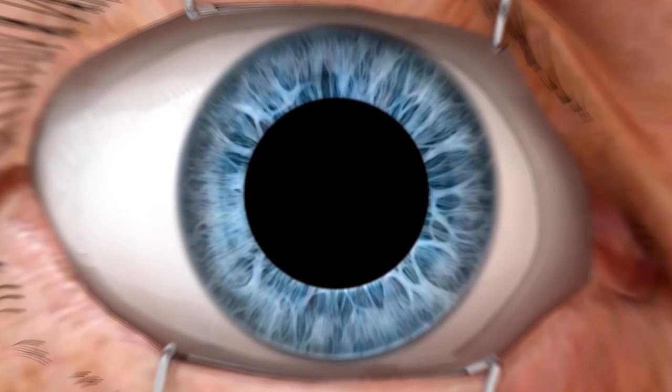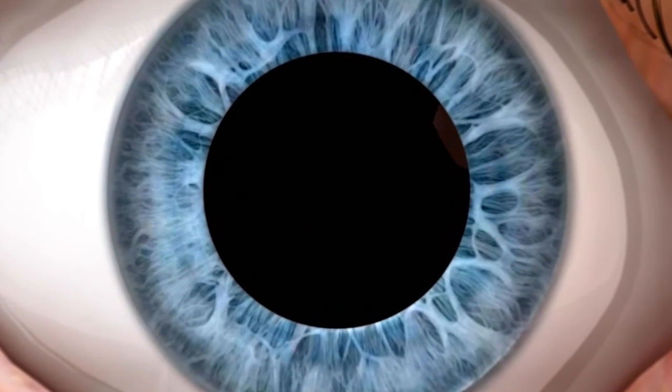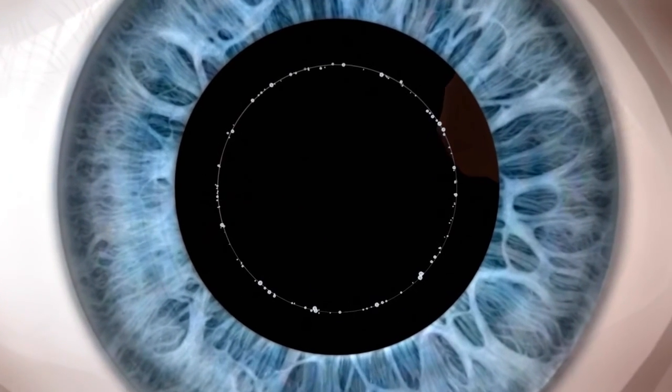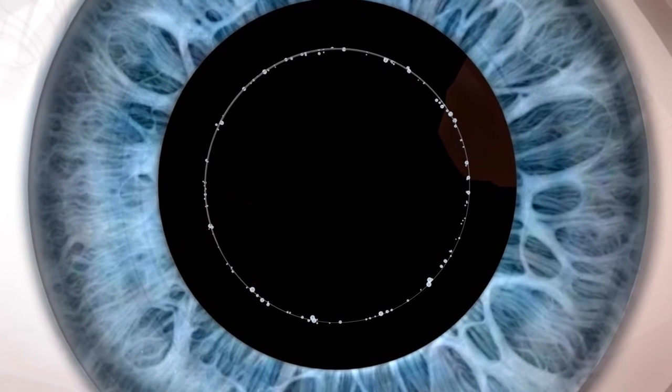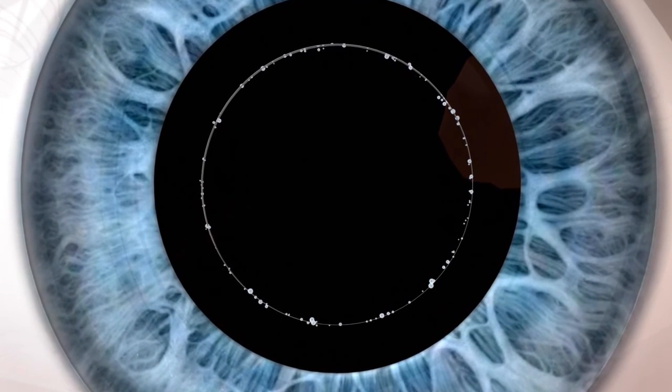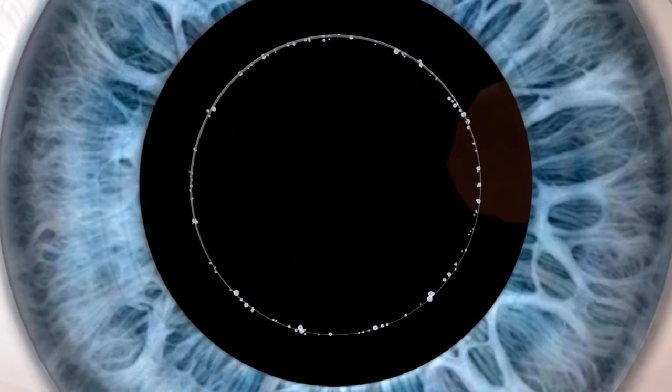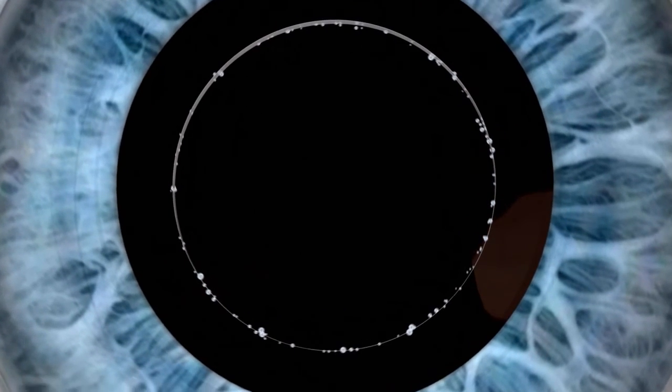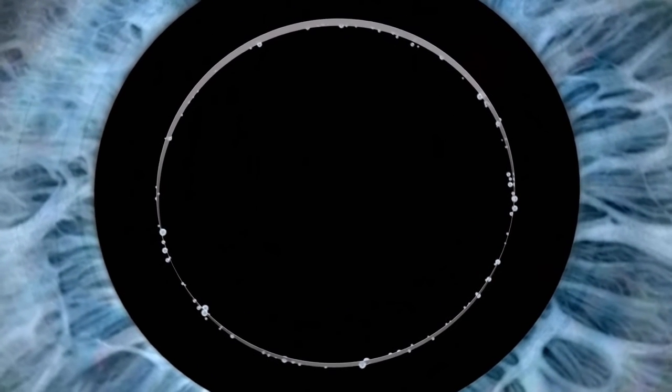First, the capsulotomy is performed, creating a precisely centered capsular axis. This is very important as proper capsulotomy size has been shown to impact the effective lens position, a key parameter in IOL power calculations.